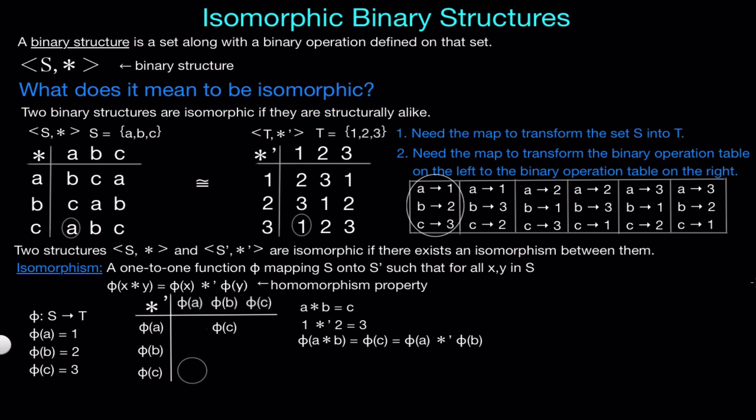So this combination satisfies the homomorphism property. Let's look at a different combination. This time we'll look at the third row, first column. On the left we get C star A equals A, and we know that our function sends C to 3 and A to 1. So we look at the right table and see that 3 star prime 1 outputs 1, which is phi of A. So again we have shown that phi of C star A equals phi of A, which equals phi of C star prime phi of A. Now if we go through and check each spot, you will see that the homomorphism property holds for all x and y in s. So the function we have defined here is a homomorphism, and from that we can say that this function is also an isomorphism.